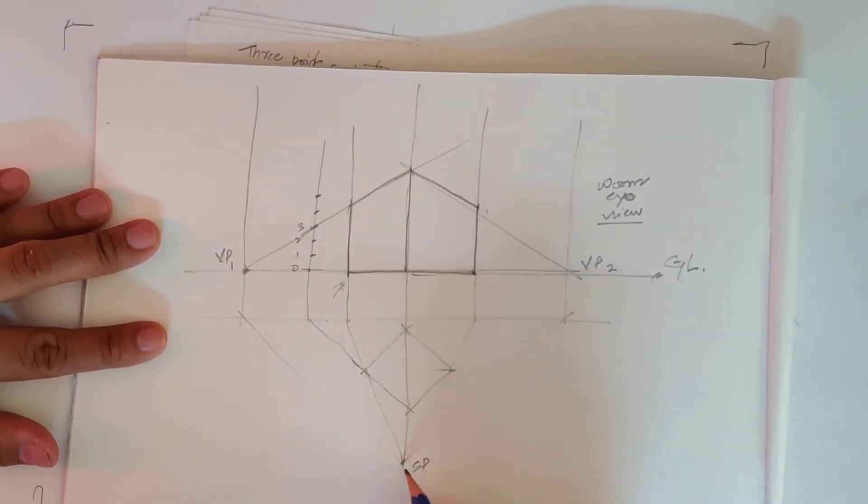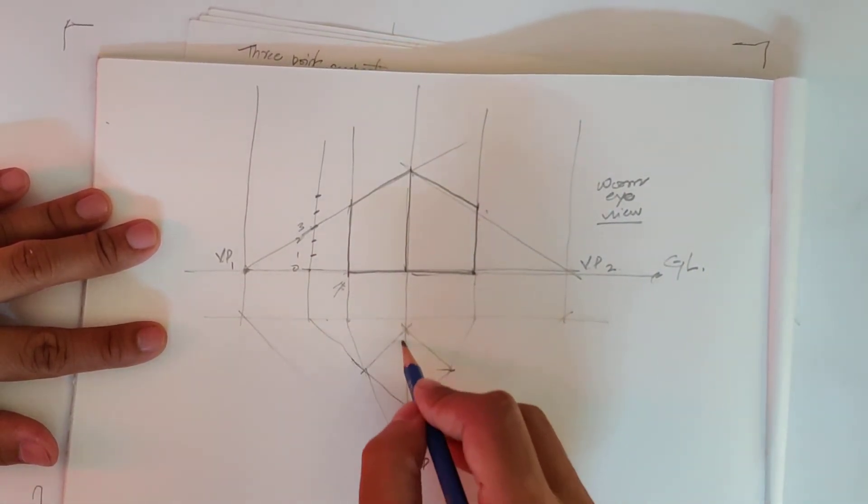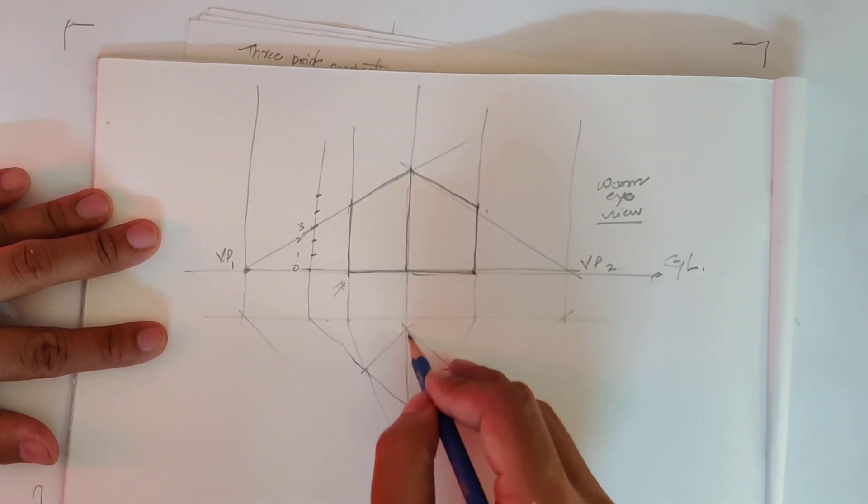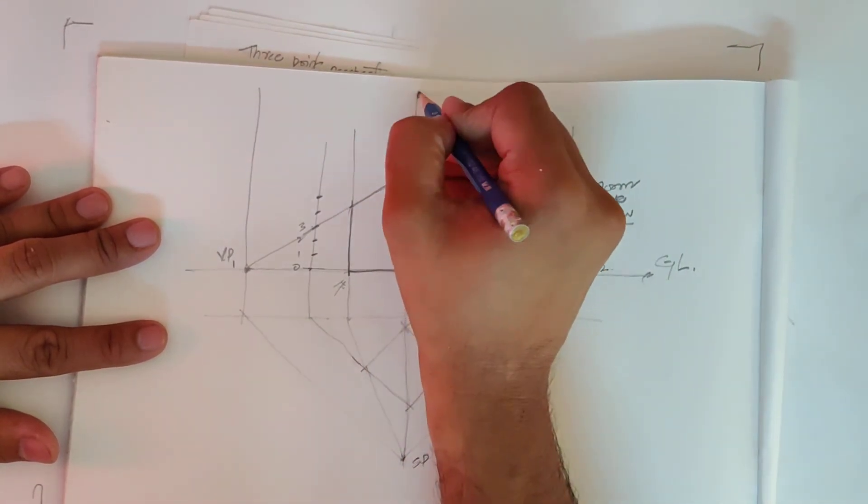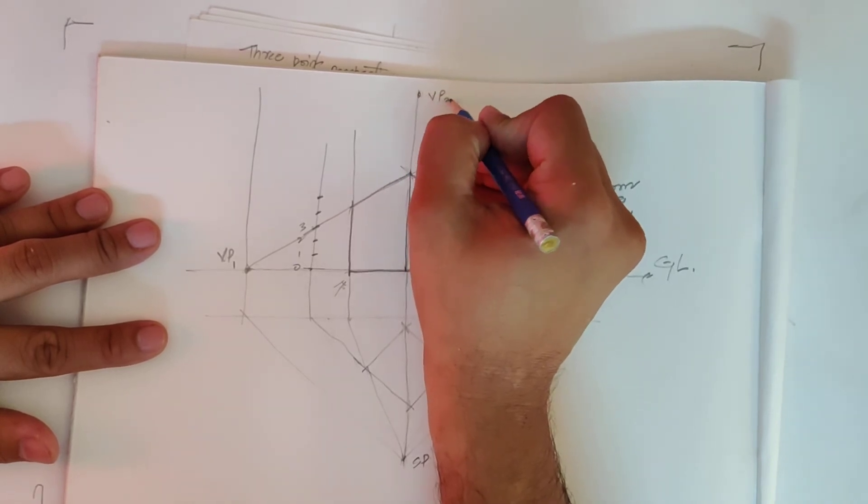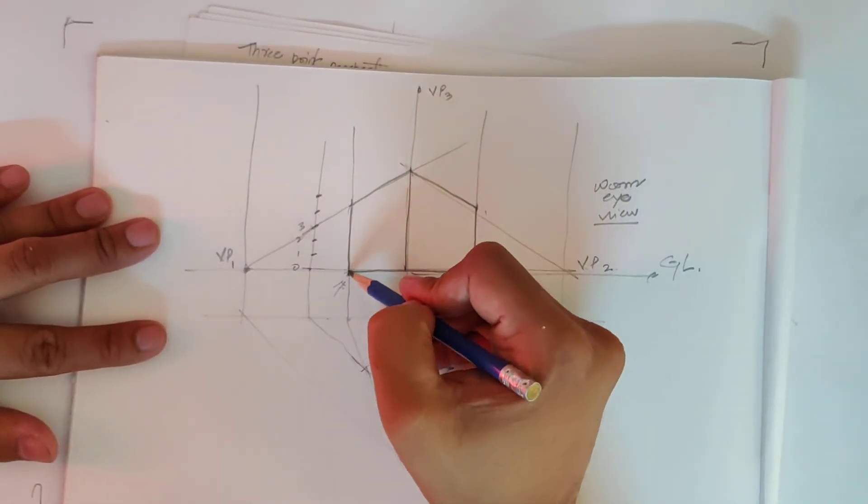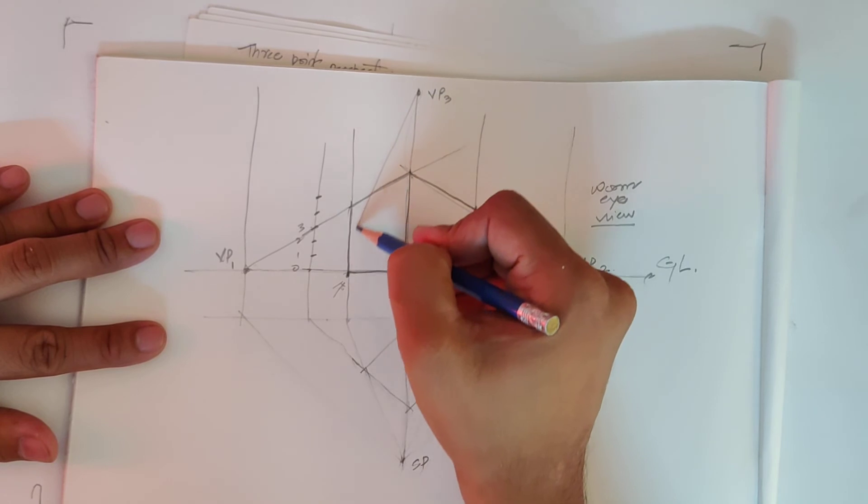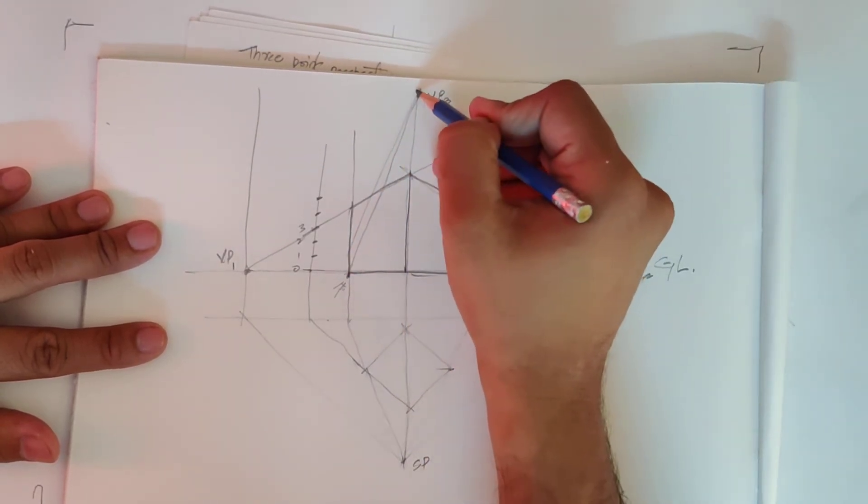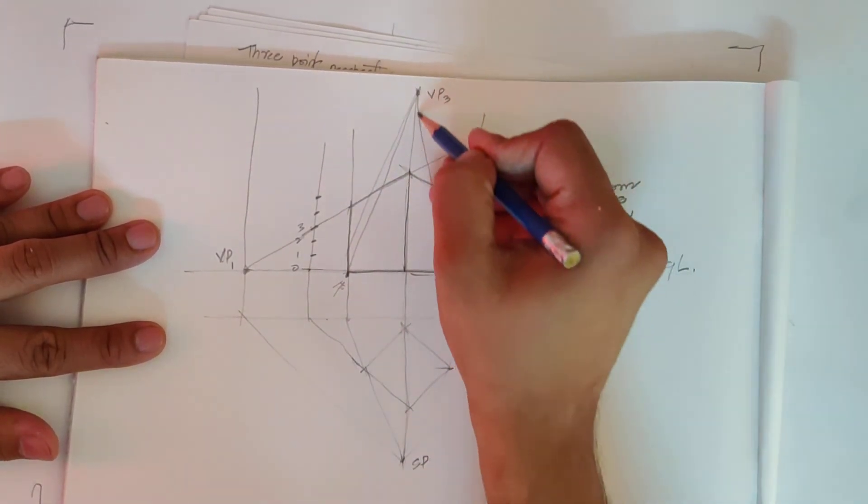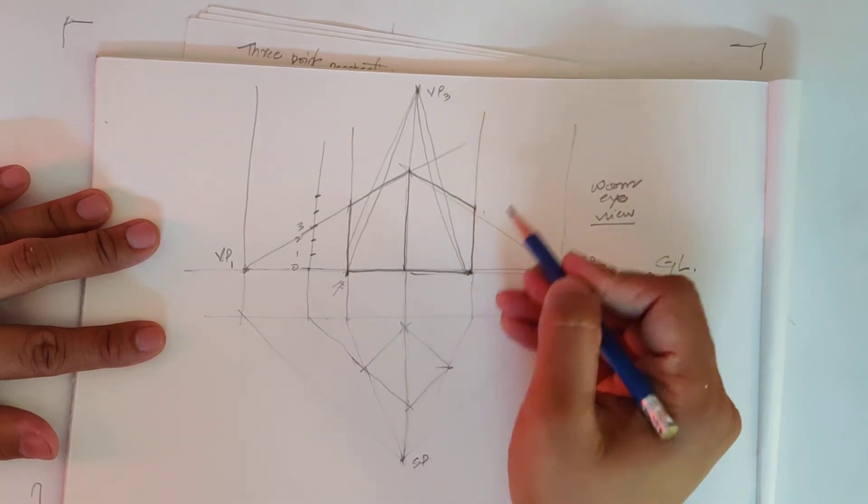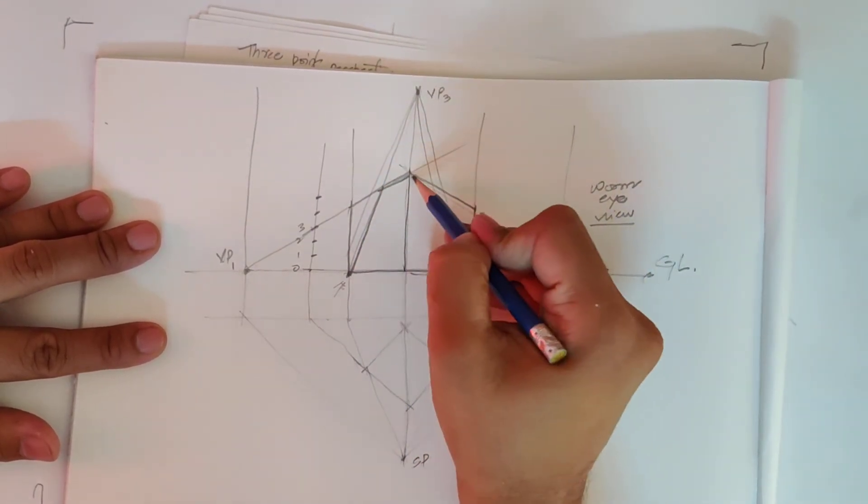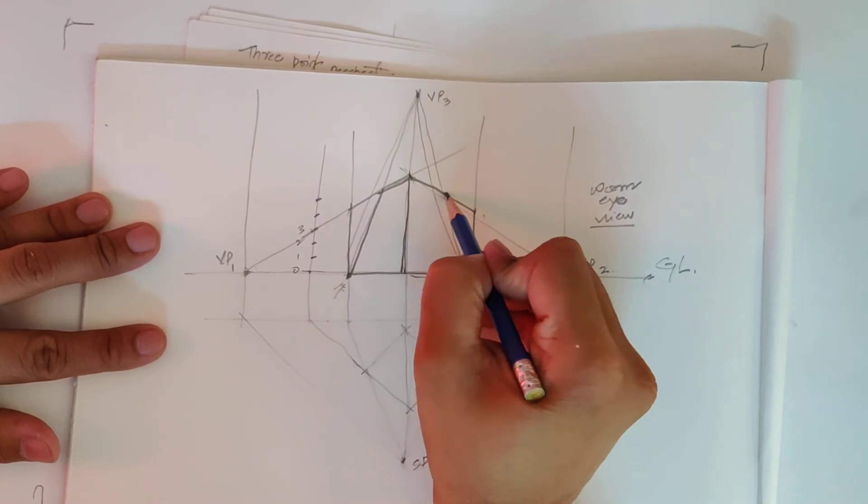So to make this, mark your vanishing point three on this center line, and mark this bottom height point. So now this object will look like this.